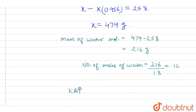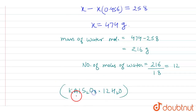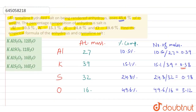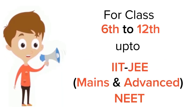Therefore, the empirical formula of the crystalline salt is KAlS₂O₈·12H₂O, and the empirical formula of the anhydrous salt is KAlS₂O₈. Checking the options, the first option KAlS₂O₈·12H₂O is correct. That is the answer.